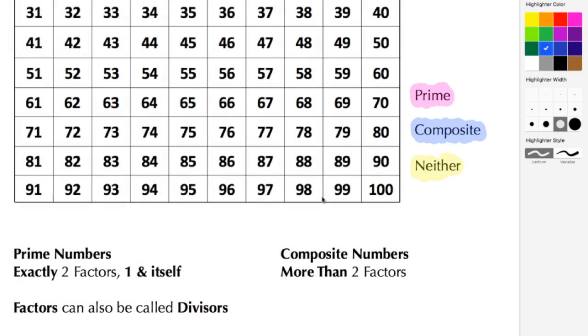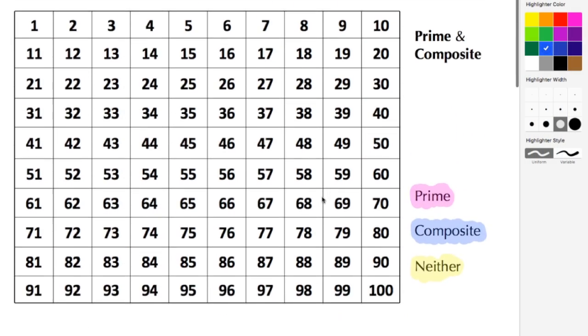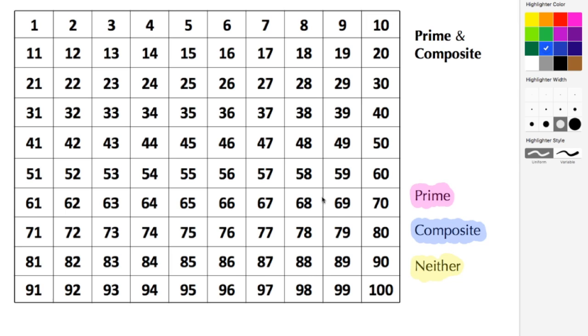AJspeller.com. In today's video we're going to learn about prime and composite numbers. Here we have a 100 chart, and we're going to classify the numbers from 1 through 100 as either prime, composite, or neither.